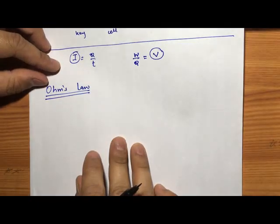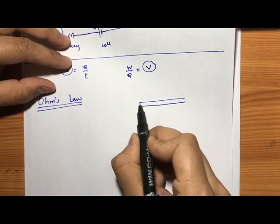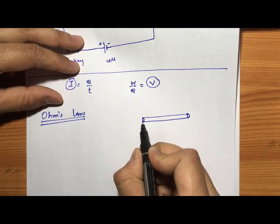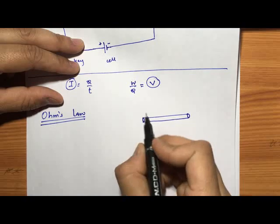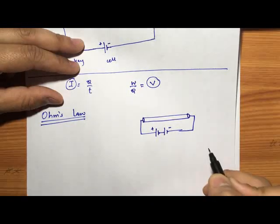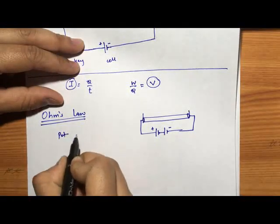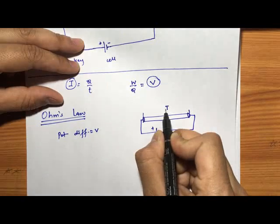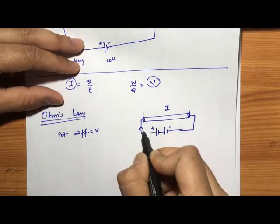Before considering Ohm's law, let us consider the situation. Consider a conductor — it can be a metallic wire or any piece of conductor. Suppose I have applied some potential difference across its terminals, which can be done by applying a cell or a battery. The potential difference between the terminals of the conductor is V, and due to this, the current flowing in the circuit is I. The direction of current is always taken from positive to negative.